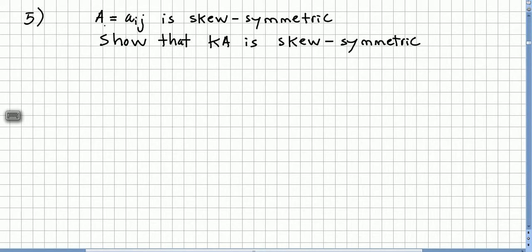So if matrix A (Aij) is skew-symmetric, show that kA, where k is a scalar, is also skew-symmetric.